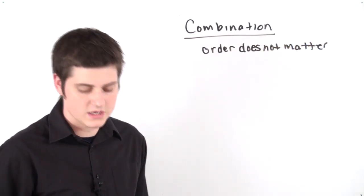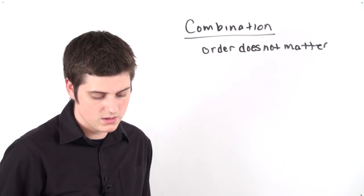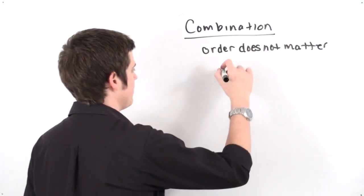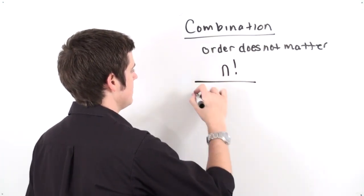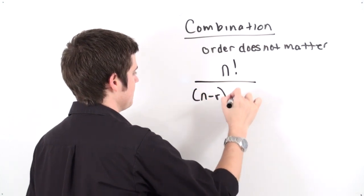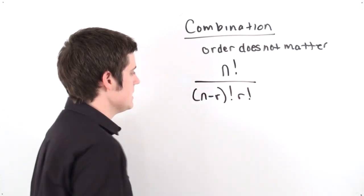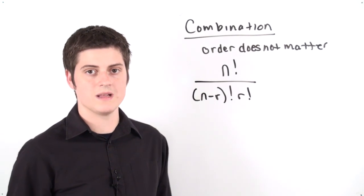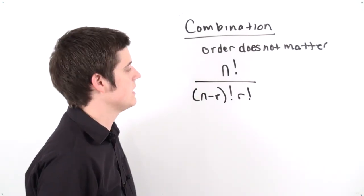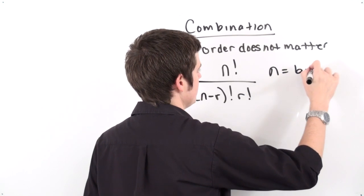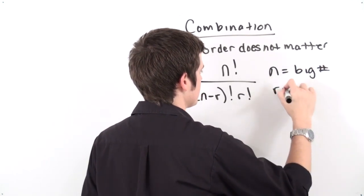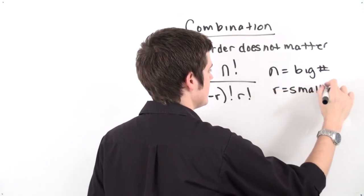So whenever we're dealing with a combination, there's one key concept you need to remember: the formula that's on the page is going to have n factorial, then underneath n minus r factorial times r factorial. So now we have an extra r factorial on the outside of what we originally had. Now again, n is going to represent the big number and r is going to represent the small number. That's always going to be the case.